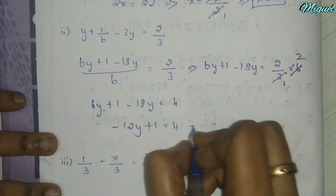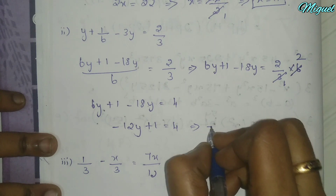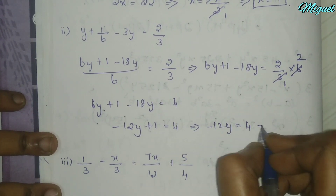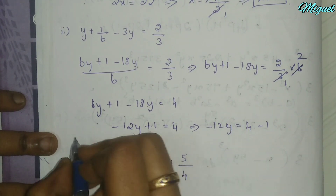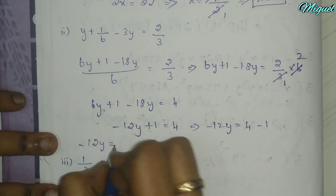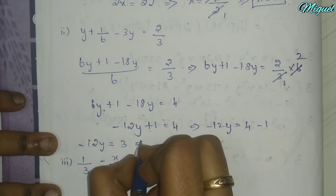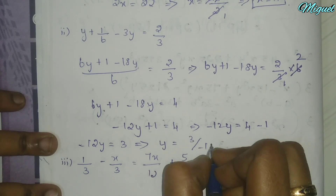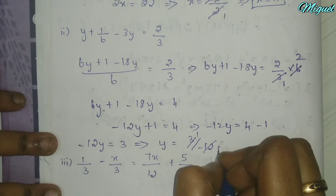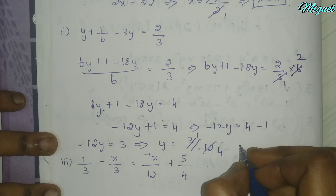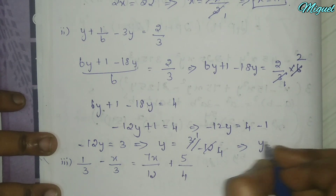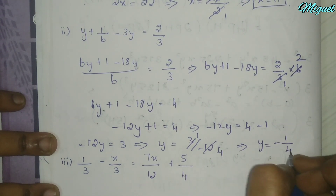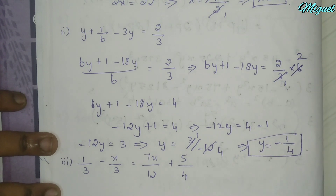So minus 12y plus 1 equals 4. Transposing 1: minus 12y equals 4 minus 1 equals 3. Therefore y equals 3 divided by minus 12, which simplifies to minus 1 by 4. That is the value of y.